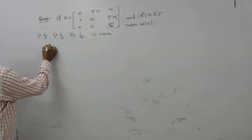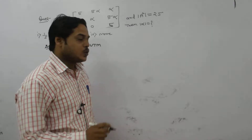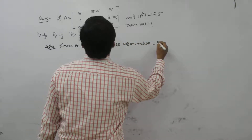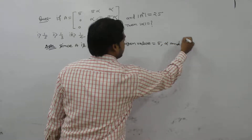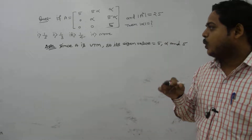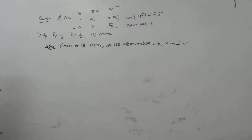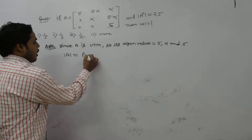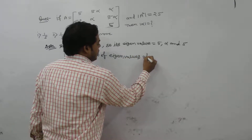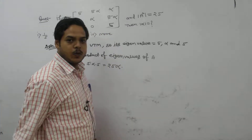Since A is an upper triangular matrix, its eigenvalues are 5, alpha, and 5. We know a well-known result: the product of the eigenvalues of any matrix equals the determinant of that matrix. So the determinant of A equals the product of eigenvalues, which is 5 × alpha × 5 = 25 alpha.